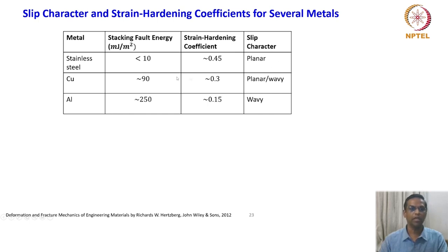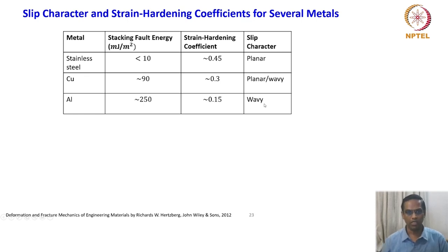The slip character for stainless steel is named as planar. Then if you go to the next metal, copper, which has a significantly higher stacking fault energy, the slip character is described as planar/wavy. Finally, for aluminum the stacking fault energy is very, very high, around 250 millijoules per meter square. For aluminum the strain hardening coefficient is 0.15 and the slip characteristic is designated as wavy. The table basically summarizes materials having two extreme cases of stacking fault energy, while copper has a middle range.